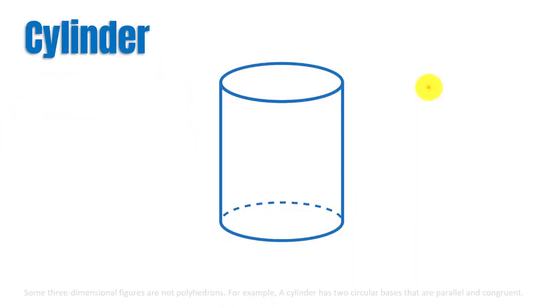Not all three dimensional figures are polyhedron. Some three dimensional figures are not polyhedron. For example, a cylinder has two circular bases that are parallel and congruent. Hence, it is not a polyhedron.